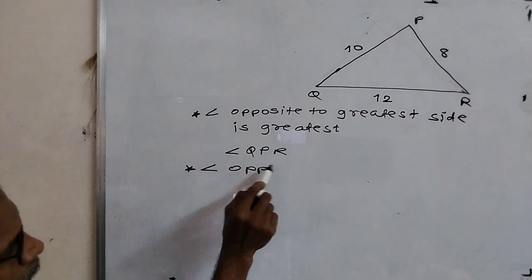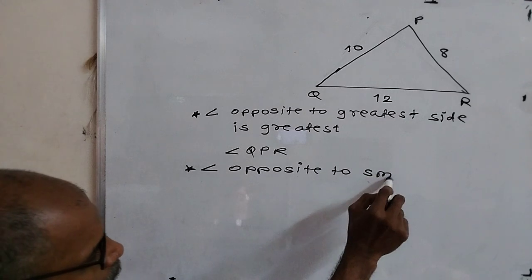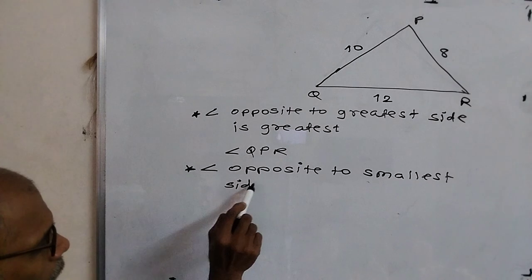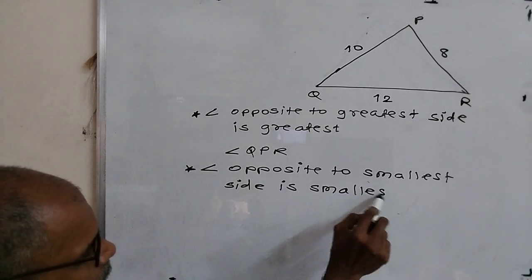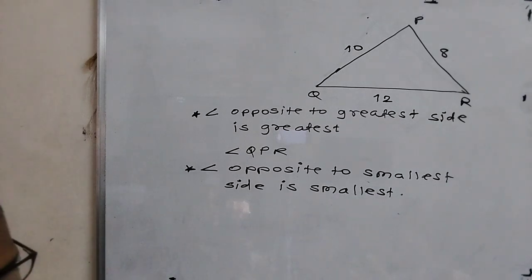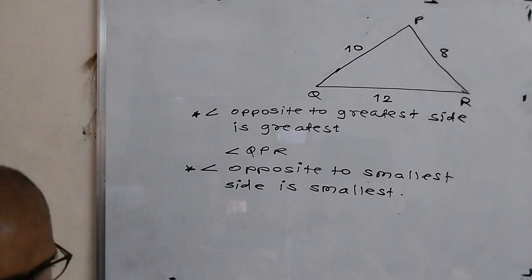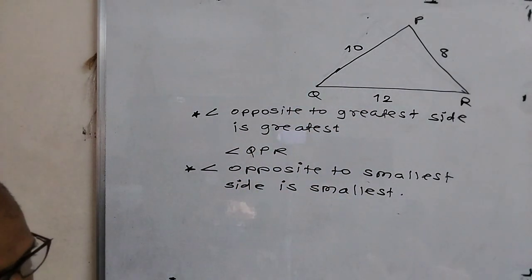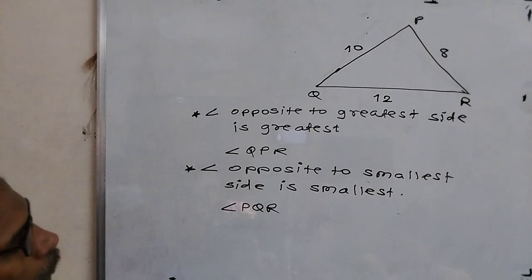Angle opposite to smallest side is smallest. Now which is smallest side? 8. PR is 8, 8 centimeter or 8 units. PR is 8 units. If given centimeter, then centimeter. Then angle opposite to PR, what is? PQR. Angle PQR. Very simple.